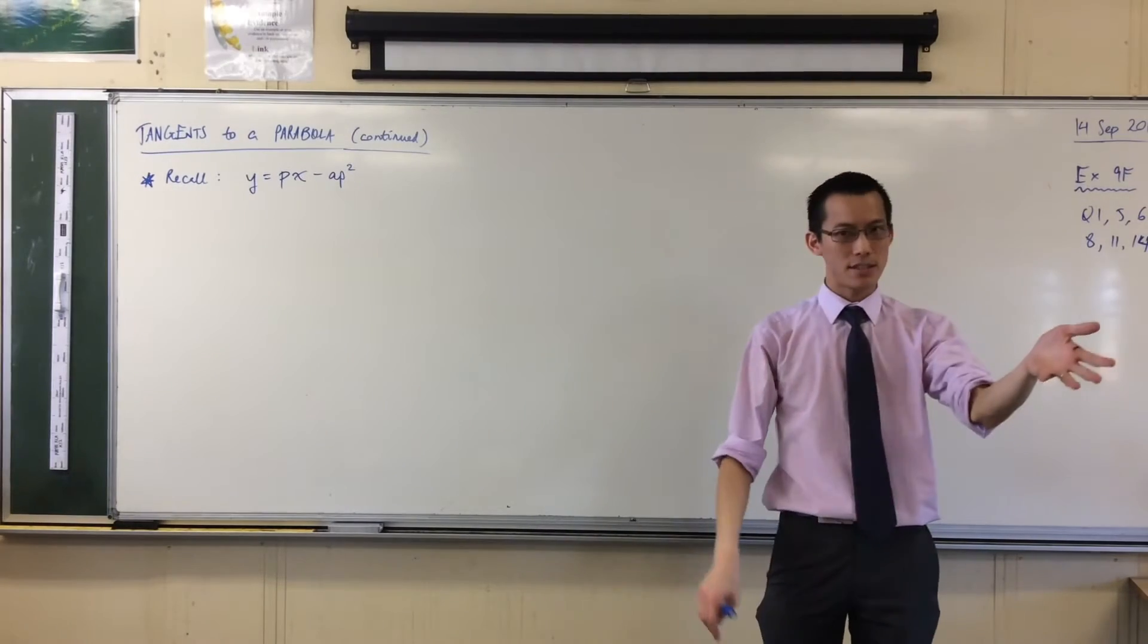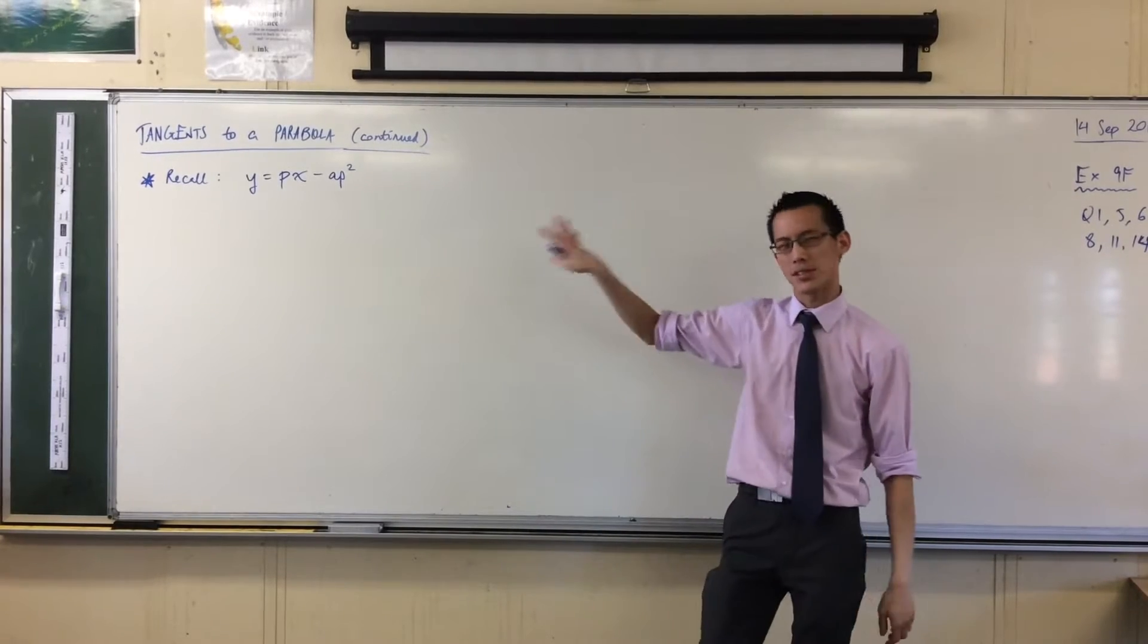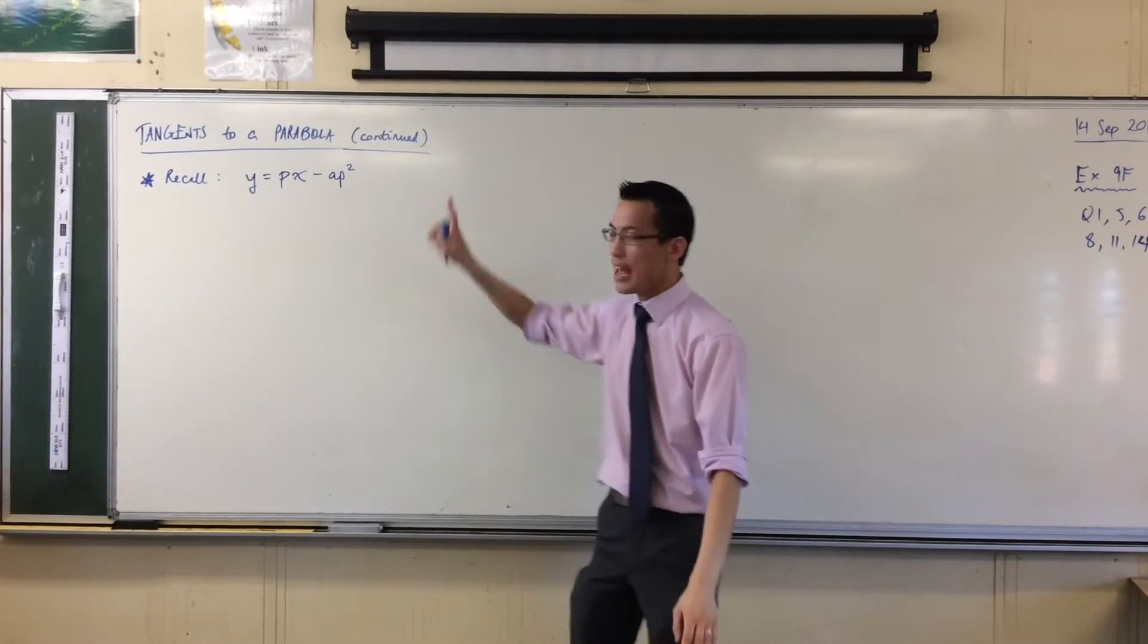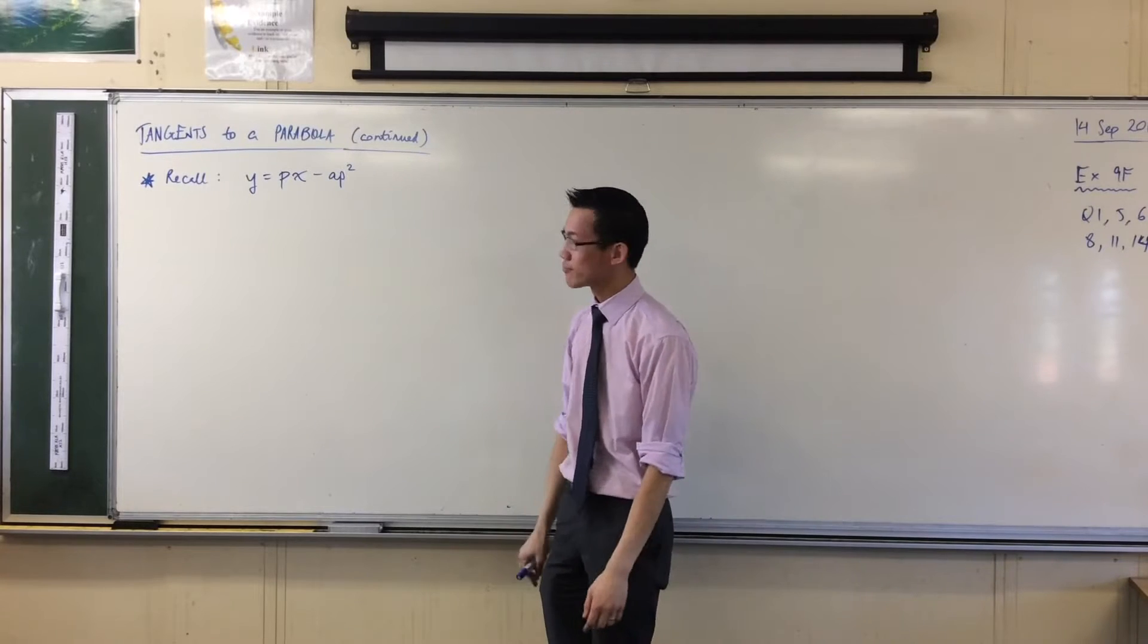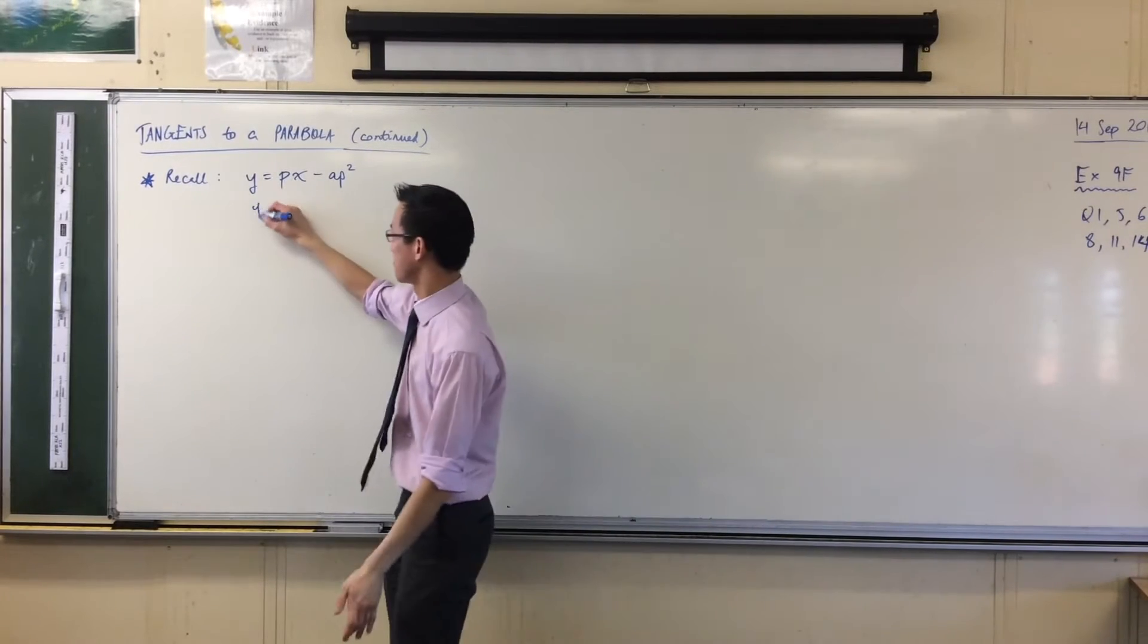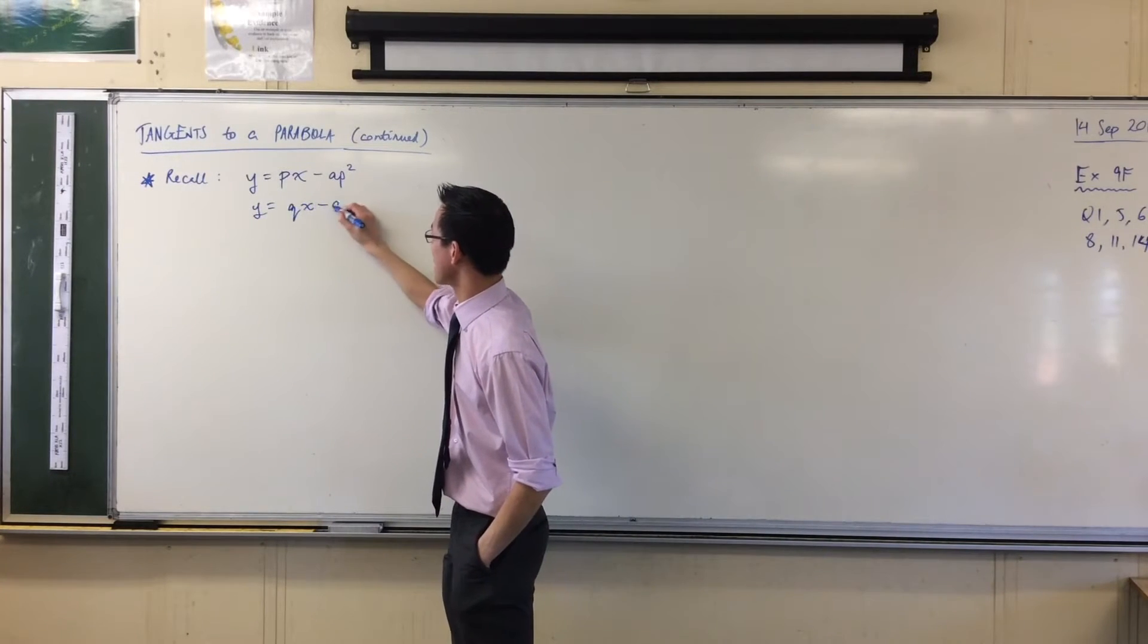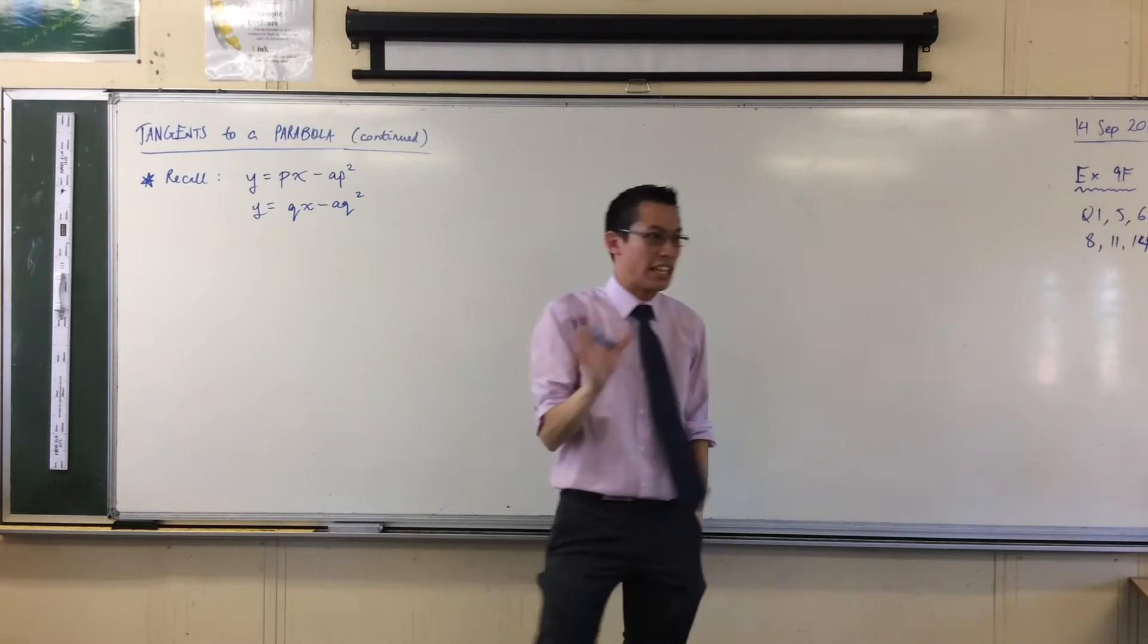So here's the first interesting thing we're going to look at, which will sort of reveal the power of why these ways of saying the equations are so useful. If this is a tangent at P, what might be the equation of a tangent at Q? QX minus AQ squared. No big deal.